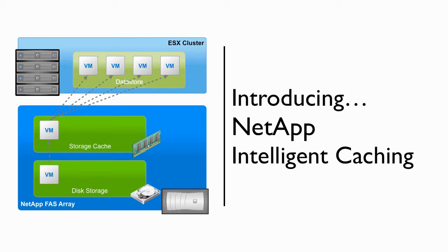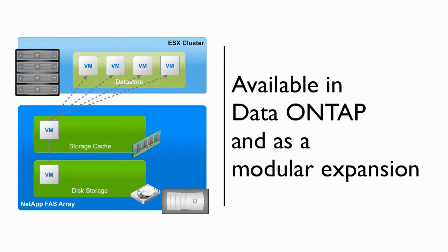This technology is called intelligent caching, and is another way that with NetApp Storage Controller, you can serve more data with less hardware. Intelligent caching is available on any storage array running Data ONTAP. It's also available as a modular expansion, currently available in 256 and 512 gigabyte increments.